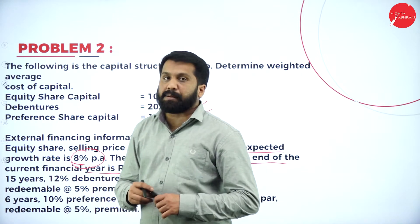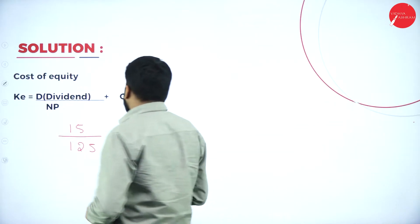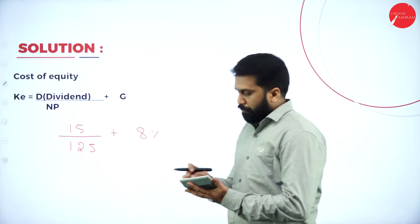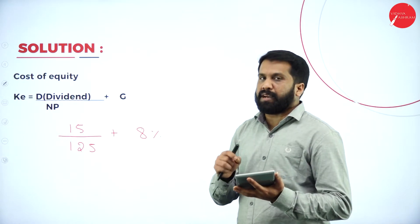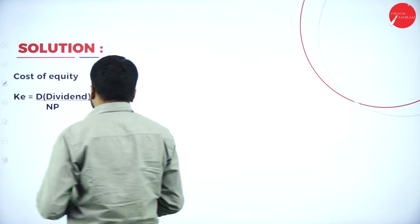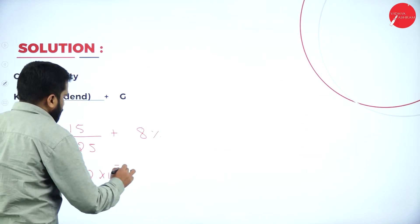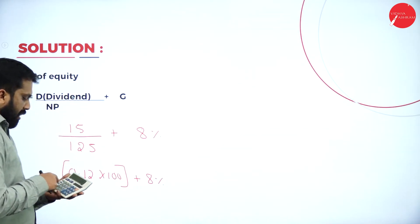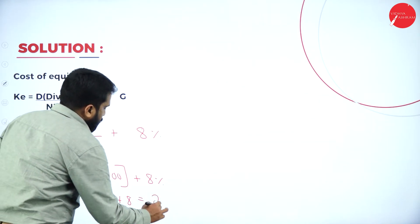The growth rate is 8%. Now, calculate: 15 divided by 125 gives 0.12. Multiply by 100 to get 12%. Plus 8% growth rate gives 12 plus 8, which equals 20%.